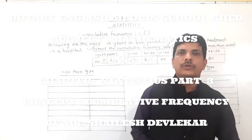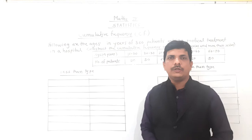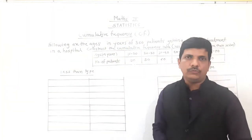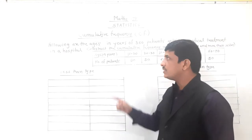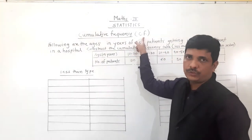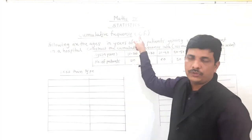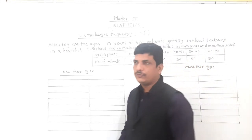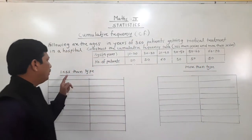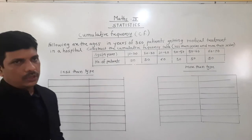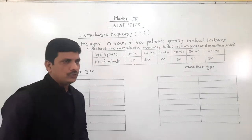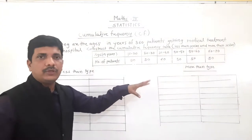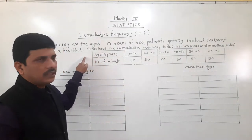Hello everybody. Today we are going to see our next concept, that is cumulative frequency. Cumulative frequency — in short we can say CF: C for cumulative and F for frequency. There are two types of cumulative frequency. First one is less than type and second one is more than type. We are going to see what cumulative frequency is and what the types are with the help of an example.